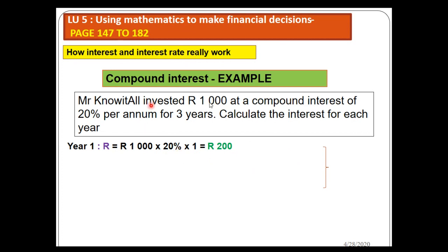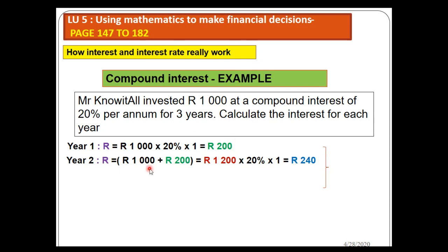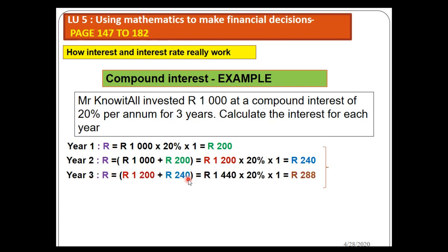From year two onwards this differs from simple interest. In year two, we take the principal of 1000 plus the previous interest of 200, so the investment in year two is 1200. Now 1200 times 20% times one year gives us 240. The interest changed because the initial amount was increased by the previous interest. In year three, we take 1200 plus 240, giving us 1440, then multiply by 20%.